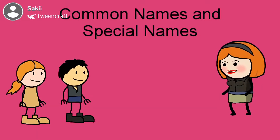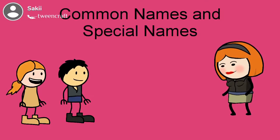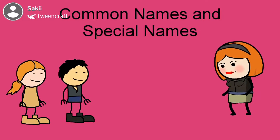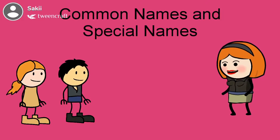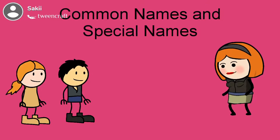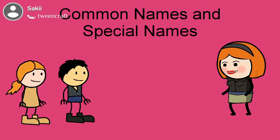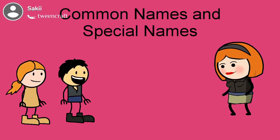Now what about a school name? Ma'am, school is a common name. School is a common name because it can be any school — woh koi bhi school ho sakta hai. Humne school ka naam nahi bataya. What about a dog? Ma'am, it will be a common name, because it can be any dog.